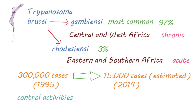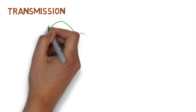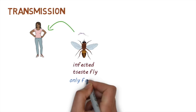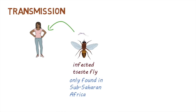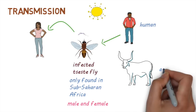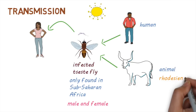Let's have a look at how the disease is transmitted. The parasite is transmitted to humans through the bite of an infected tsetse fly. These flies are only found in Sub-Saharan Africa, most commonly in rural areas. Both female and male flies can transmit the infection, and these flies tend to bite during daylight hours. Flies can get infected when they bite a person or animal infected with the parasite. Domestic and wild animals can carry the parasite and are important reservoirs of infection, especially for Rhodesiensi.